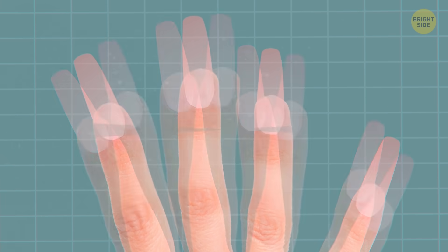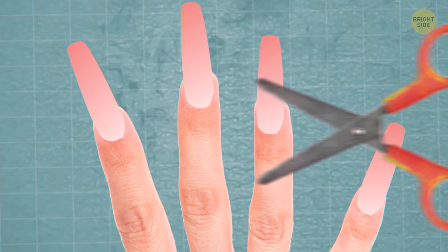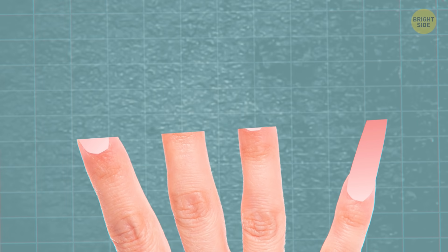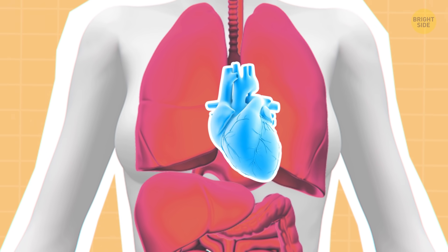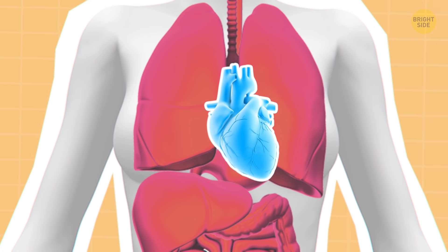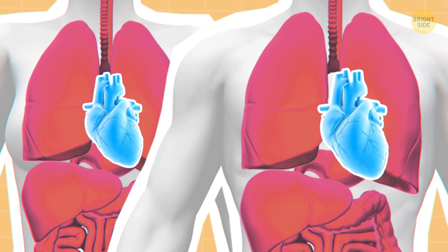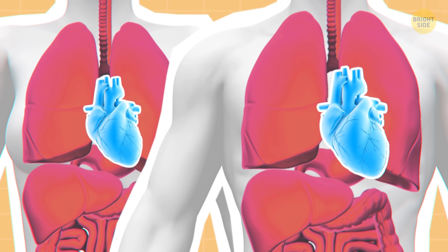Fingernails grow faster than toenails, so if you had a feeling that you have to cut them more often, it's because you do. A woman's heart beats a little faster than a man's on average. It's because their hearts are usually smaller, so they need to work harder to pump all that blood around the body.